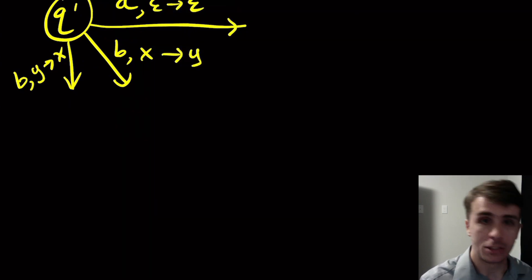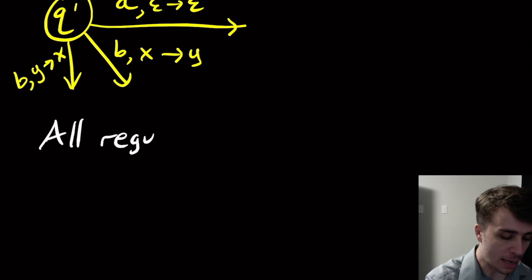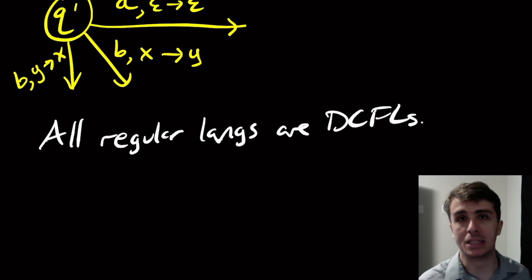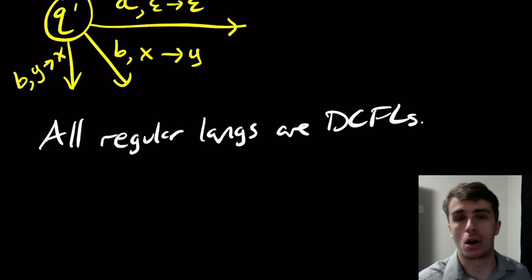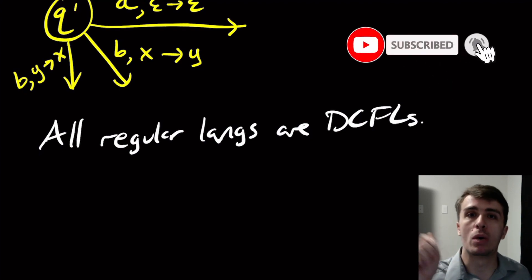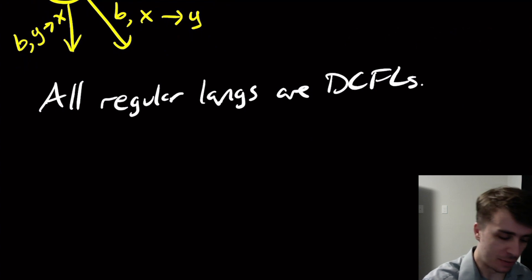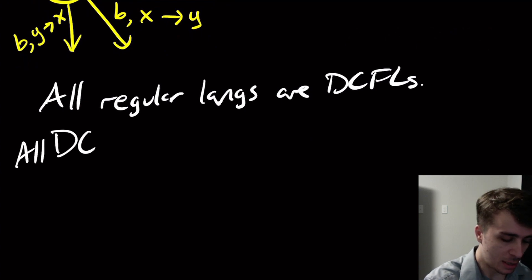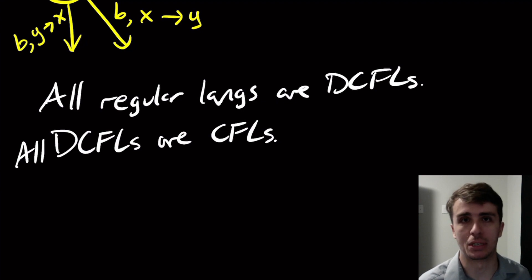What's an example of a deterministic context-free language? Well, we can easily see that all regular languages are DCFLs. If I take a DFA and add epsilon-goes-to-epsilon on each transition, each transition is distinguished by what is being read, because it's a DFA. And all DCFLs are obviously CFLs because they're already PDAs — it's just a restriction on what types of transitions are allowed, whereas normal PDAs have no such restriction.